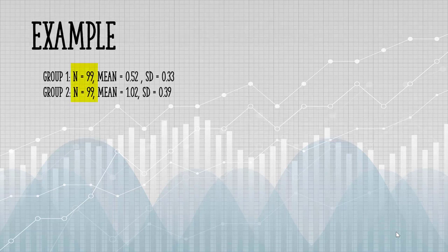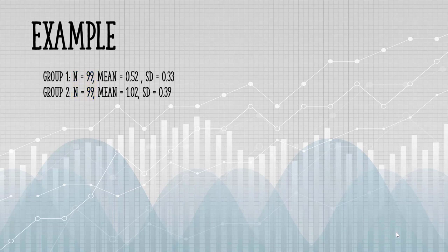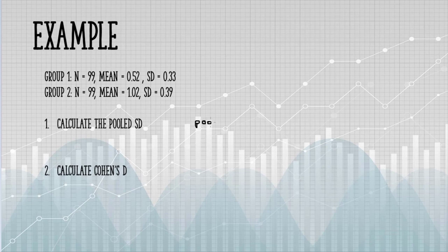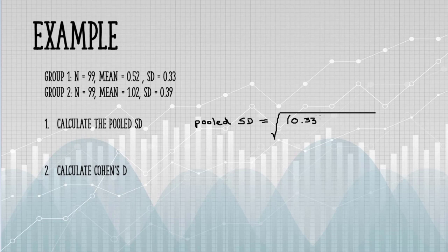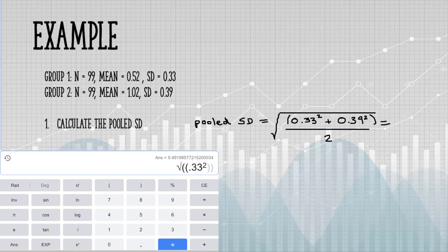For this example, I have 99 items in each group. The sample sizes are large enough, so I don't need to make any corrections. I can use the shorter formula for the pooled standard error. So my pooled standard error is going to be the two sample standard deviations added together. I'm going to divide by 2 and take the square root. That gives me 0.36.